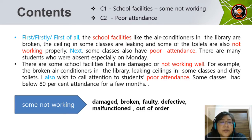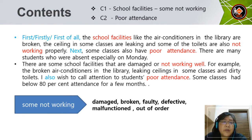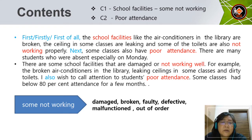Once you have finished the introduction, you can write Content 1 and Content 2. Content 1 is school facilities, some not working, and Content 2 is poor attendance. For example: 'Firstly, the school facilities like the air conditioners in the library are broken. The ceilings in some classes are leaking and some of the toilets are also not working properly. Next, some classes also have poor attendance. There are many students who are absent, especially on Mondays. Some classes kept below 80% attendance for a few months.'